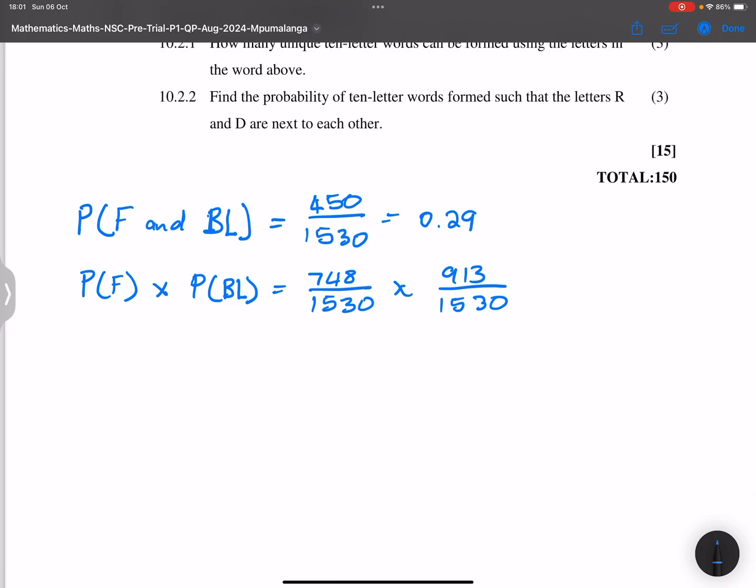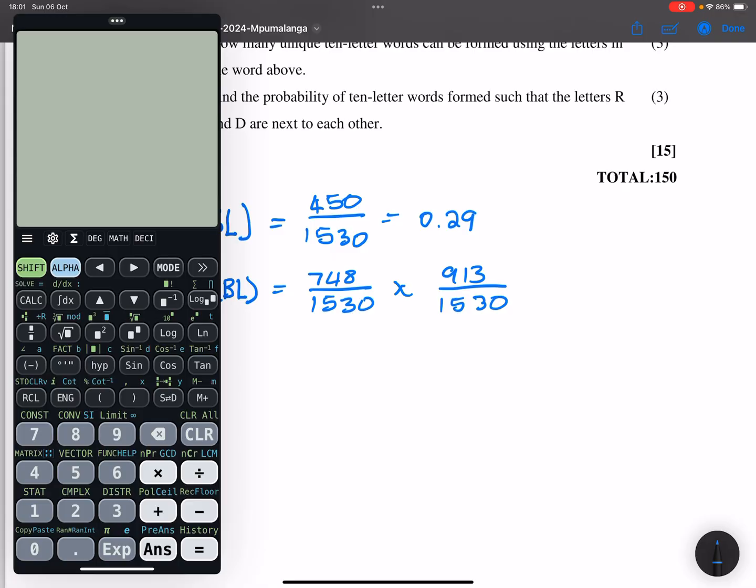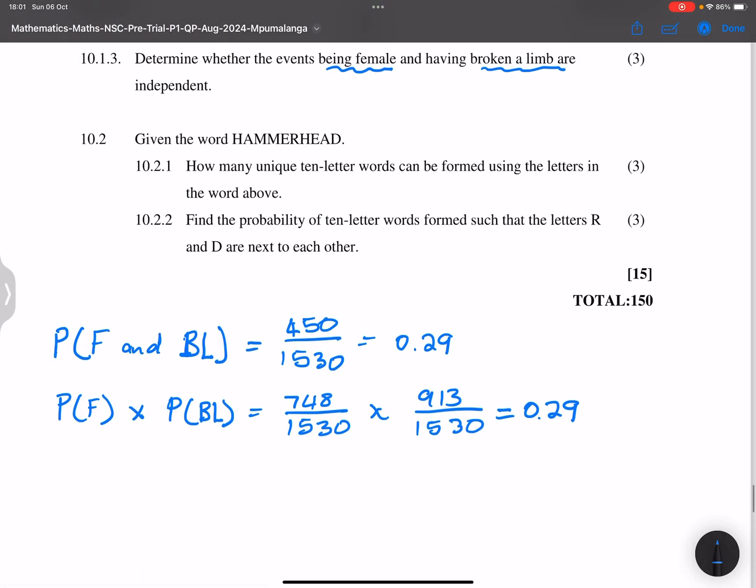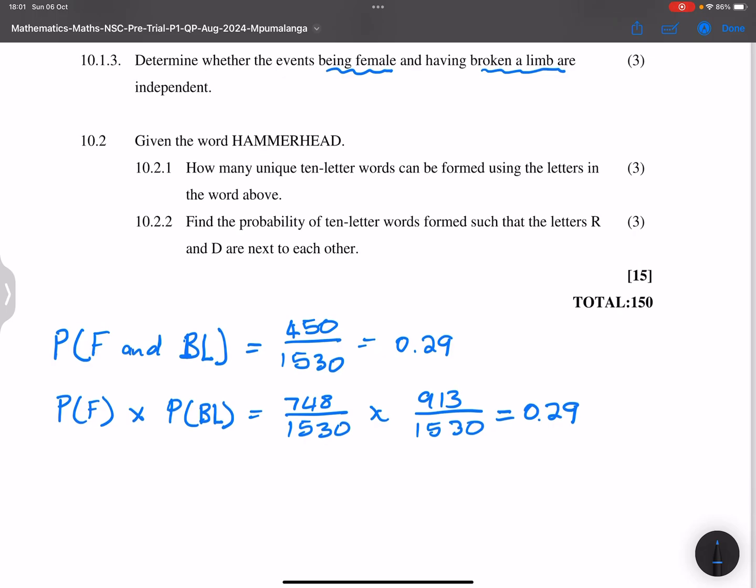So this is 913 over 1530. Now, if those two are equal, if those two probabilities are equal, then we know that the events are actually independent. So 748 over 1530, and this is multiplied by 913 over 1530. And guess what? That I find 0.29. So therefore, what does that mean to us? It means that the events are definitely independent.